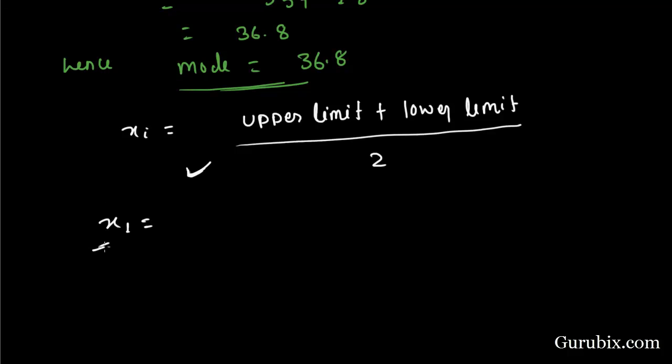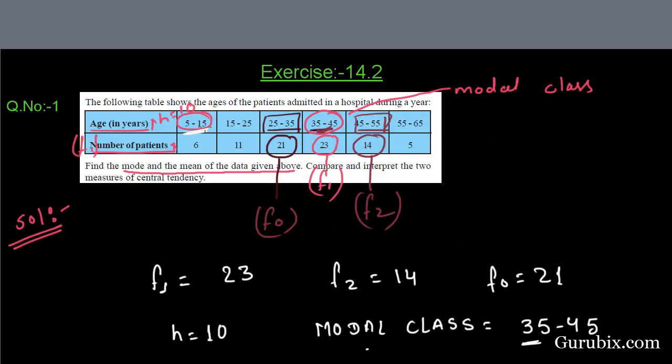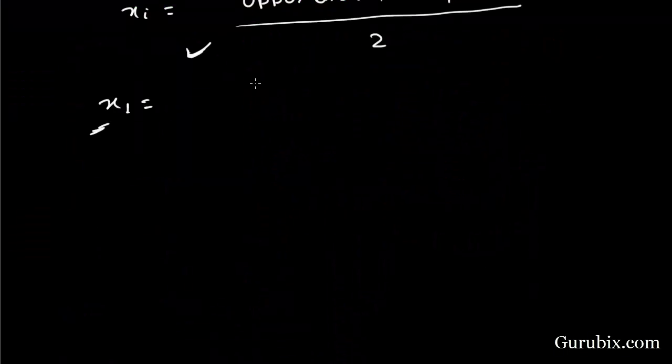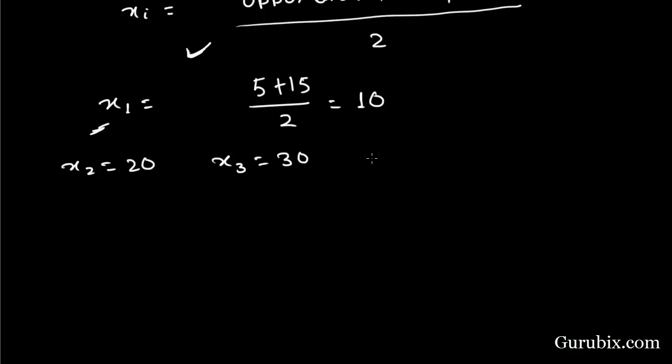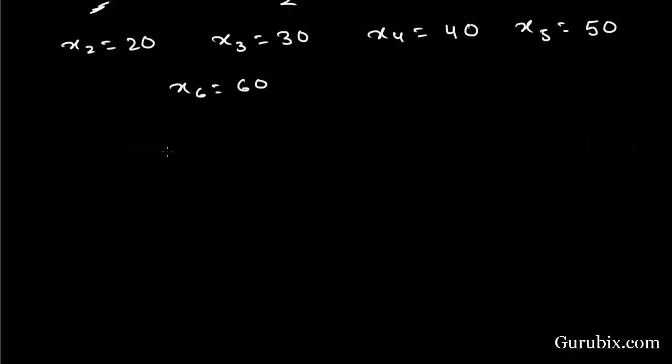So, x1 is equal to x1 means class mark of first interval. Our first interval is 5 to 15. So, x1 equals (5 plus 15) divided by 2 equals 10. Similarly, x2 is 20, x3 is 30, x4 is 40, x5 is 50, and x6 is 60.